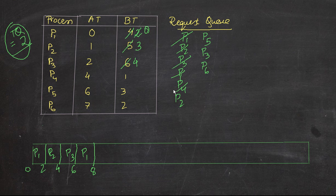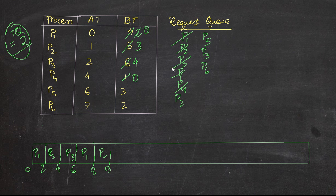Next we go to P4. P4's burst time is just 1, so even though the time quantum is 2, we will just be executing 1 unit because there's only 1 unit for P4. So P4 runs from 8 to 9 and is done. We don't need to queue it, and since all the processes have arrived already, we don't need to queue any new arrivals.